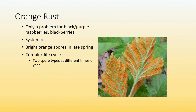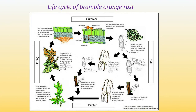Orange rust is systemic, which is different from leaf rust, which is not systemic. In spring, it produces bright orange spores and has a very complex life cycle with two spore types at different times of the year. If you have a plant infected with orange rust, early in the spring the new canes are spindly and leaves appear deformed and yellow.